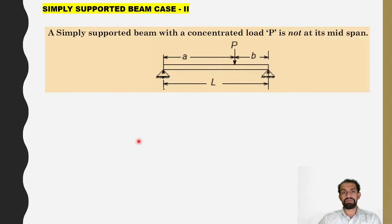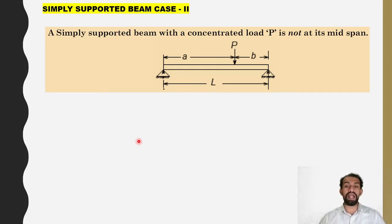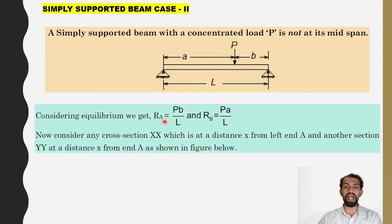Case number 2: simply supported beam with a concentrated load not at its mid span. It is at a distance 'a' from point A and 'b' from point B. Considering equilibrium, we get reaction at A as P·b by L and reaction at B as P·a by L.